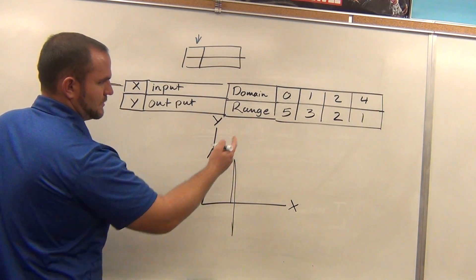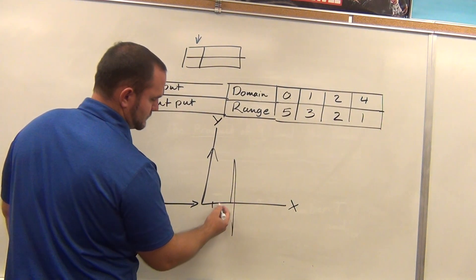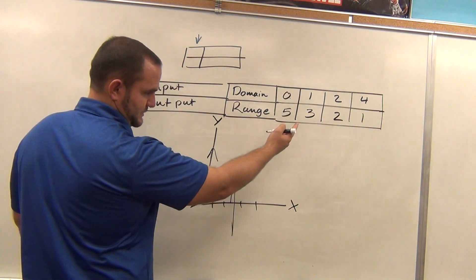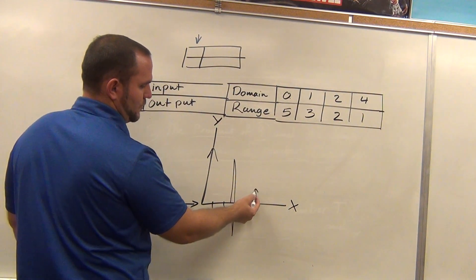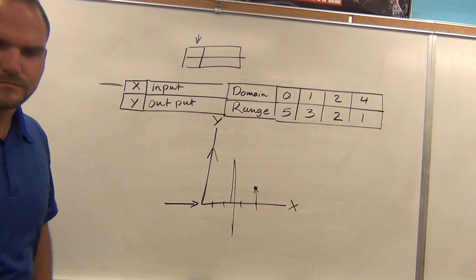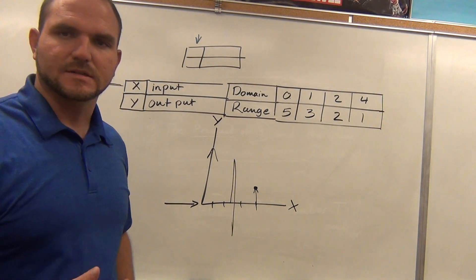If I was to go to four, I would go over to four and then go up one. So I'm going to go up one. So that is how these functions work, these tables work.